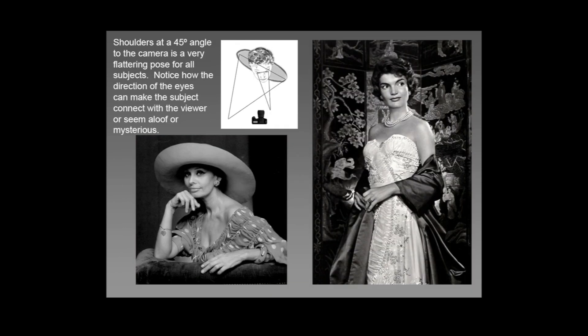These are the shoulders at a 45-degree angle to the camera — a very flattering pose for all subjects. Notice how the direction of the eyes can make the subject connect with the viewer or seem aloof or mysterious. In the lower left, Sophia Loren has her shoulders turned three-quarters to one angle and she's looking just to the right of the camera — not an intense stare, but a very pensive one, just off axis. This is a very common pose Karsh used for women. Jackie Kennedy is looking quite a bit off to the side, which is a little unnerving as she's not connecting with the camera, but her shoulder axis is really quite good.